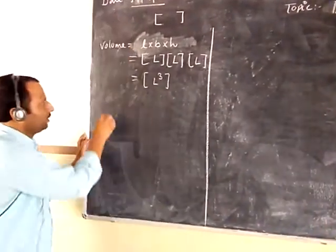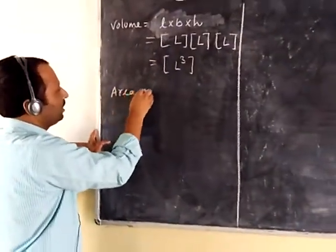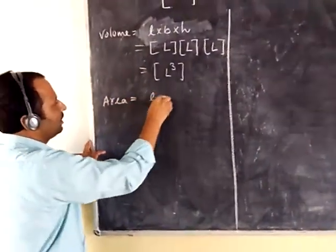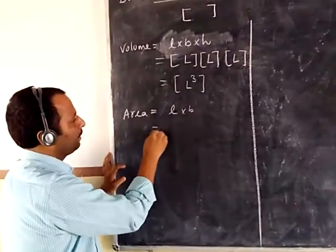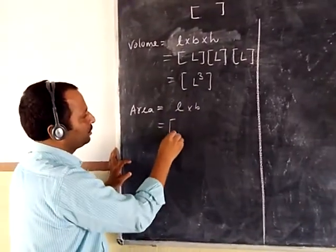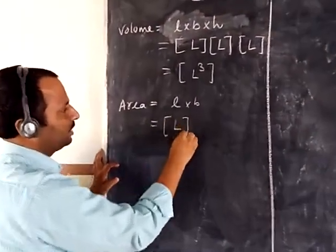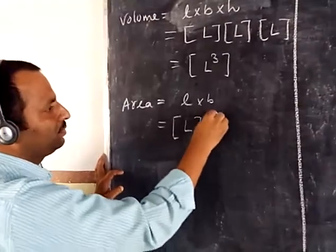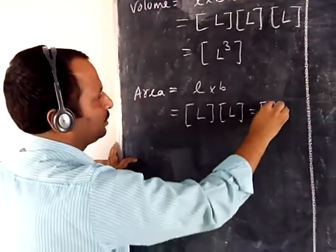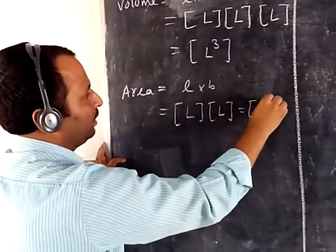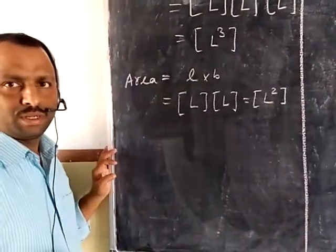The second example is area. Area is length into breadth. The dimension for length is L, and the dimension for breadth is also L. So the dimension for area is L squared.